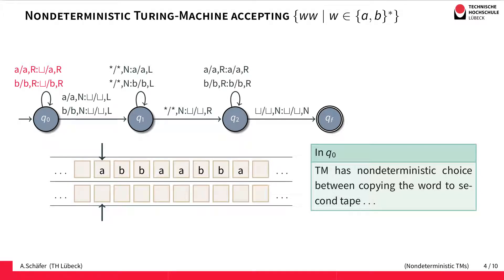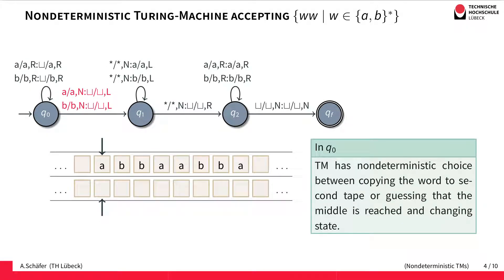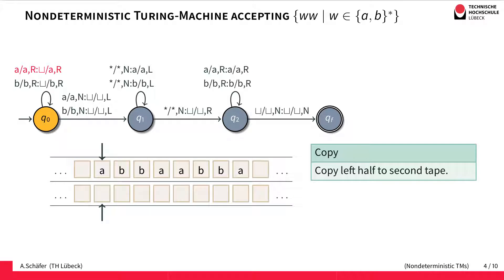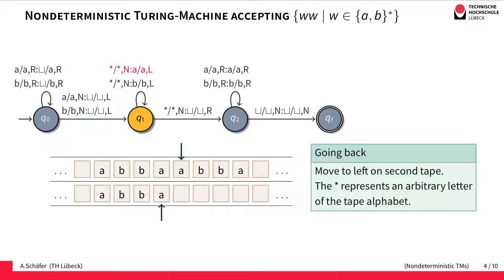The Turing machine in state Q0 can either stay in Q0 and simply copy the string from tape 1 to tape 2, or it can change state to Q1 by deciding that it has found the middle. We start in Q0, copying from the first tape to the second tape until at some point we decide we have found the middle and transition to Q1.